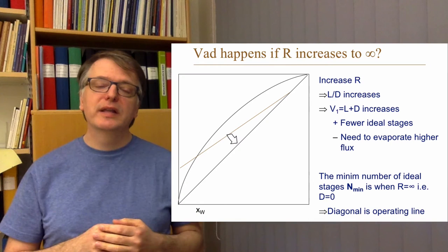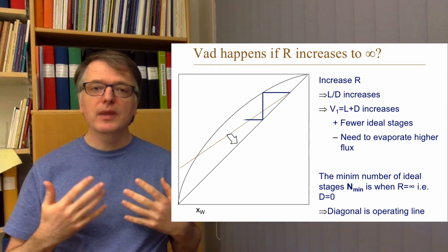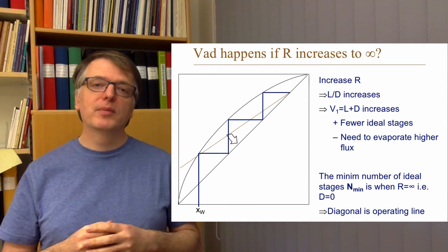What if you instead increase the reflux ratio? The highest you can increase it is to put everything back — an infinite reflux ratio — where everything goes back in and no distillate is taken out. What you get then is that the operating line coincides with the diagonal, and you get the minimum number of equilibrium stages.